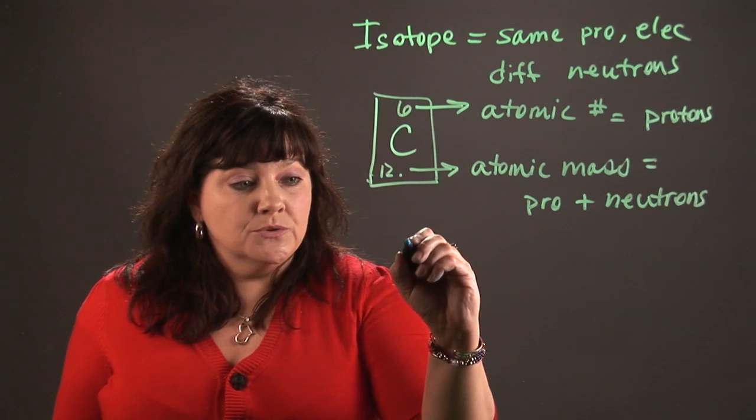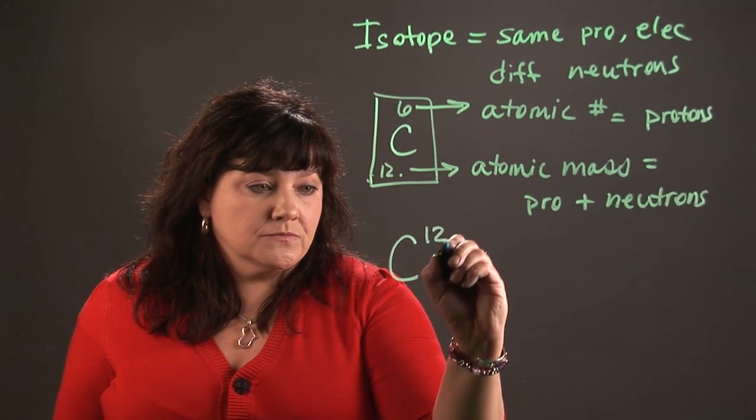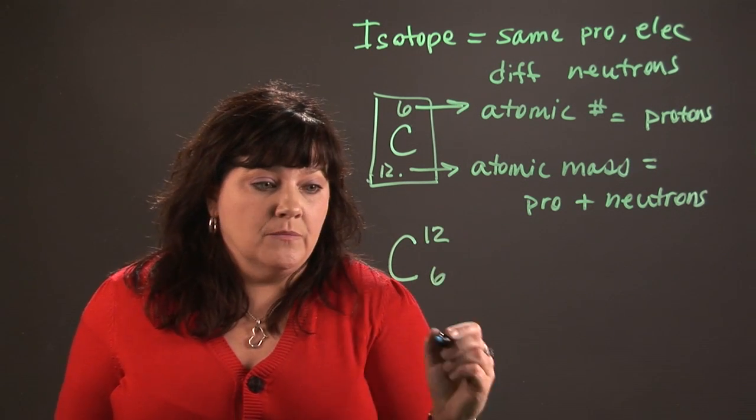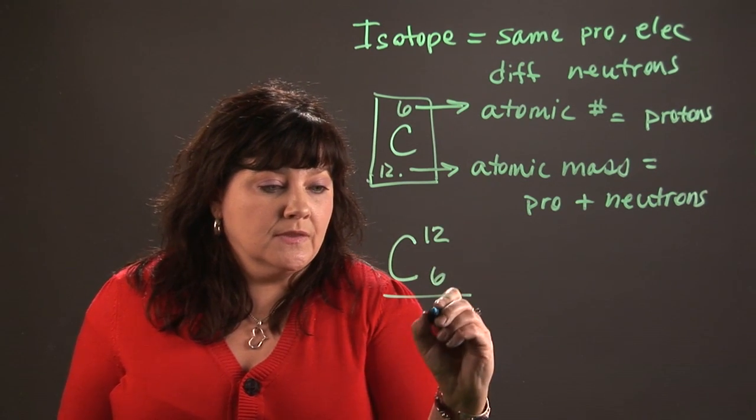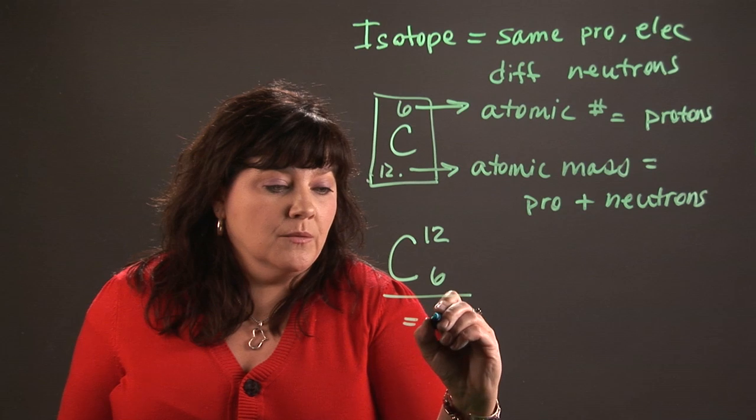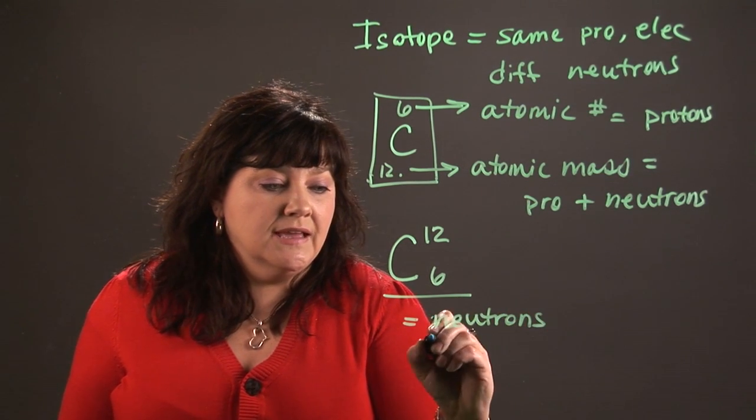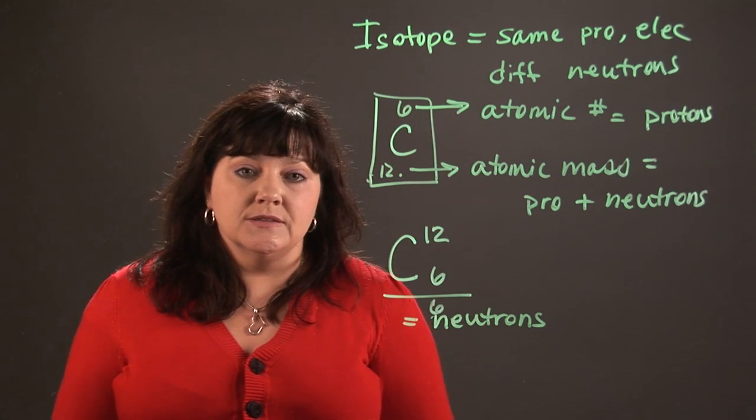So when you want to do an isotope calculation, you take the atomic number and you subtract it from the atomic mass, and that's going to give you the number of neutrons. So in this case that would be six, six neutrons.